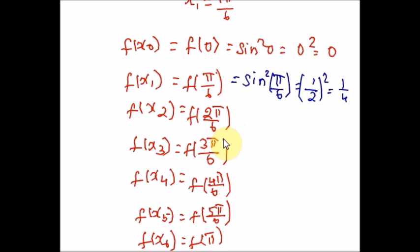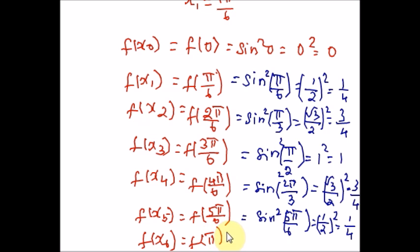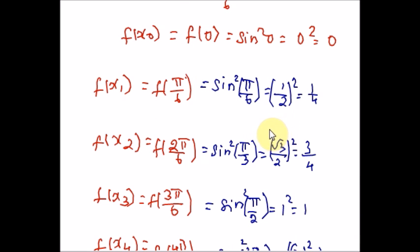Plug in 3π/6, which is π/2. Sin(π/2) is 1, so 1² = 1. Now plug in 4π/6, which simplifies to 2π/3, giving (√3/2)² = 3/4. Now plug in 5π/6: sin(5π/6) = 1/2, so (1/2)² = 1/4. Finally, π: sin(π) = 0, and 0² = 0. This step is very important in finding the area under the curve using trapezoidal rule. You have to plug in the correct values and find the corresponding values for f(xᵢ) one by one. You have to get all the values for the given limit. Finally, you are going to add all these values.